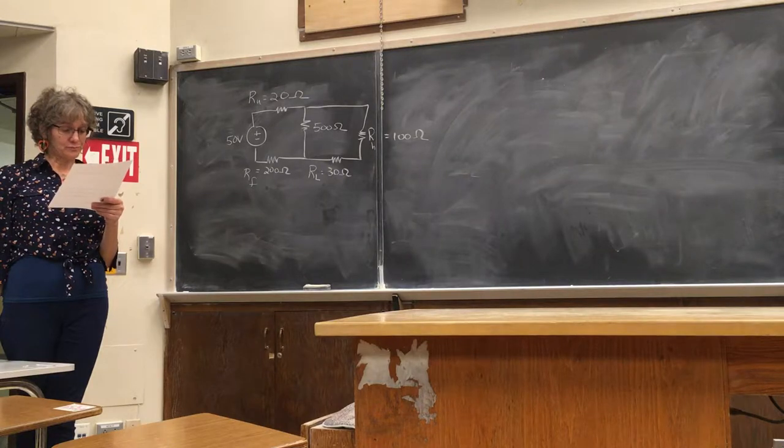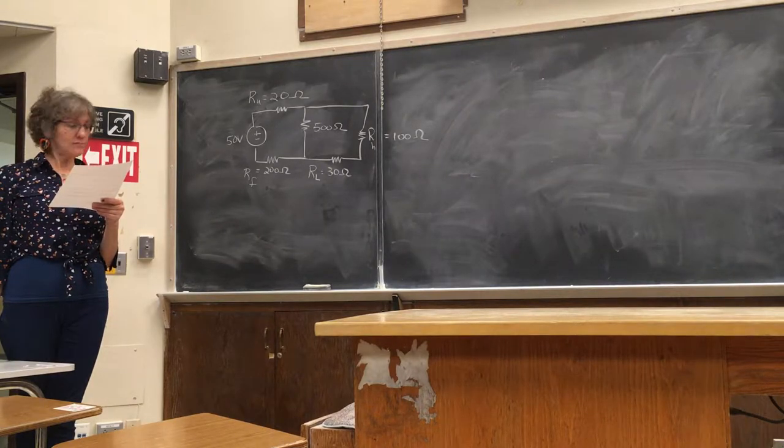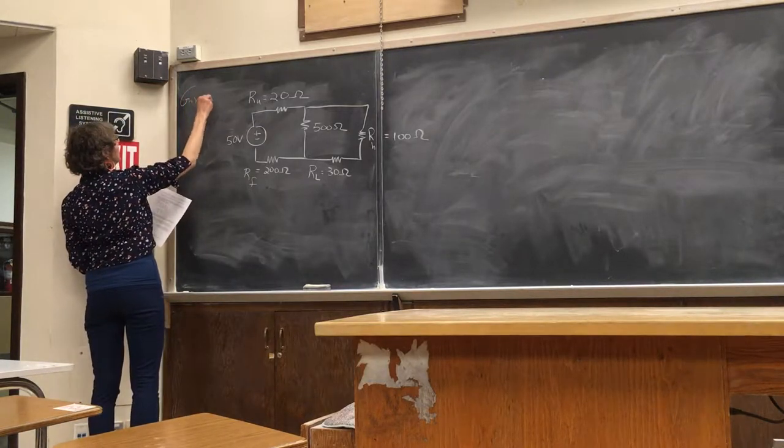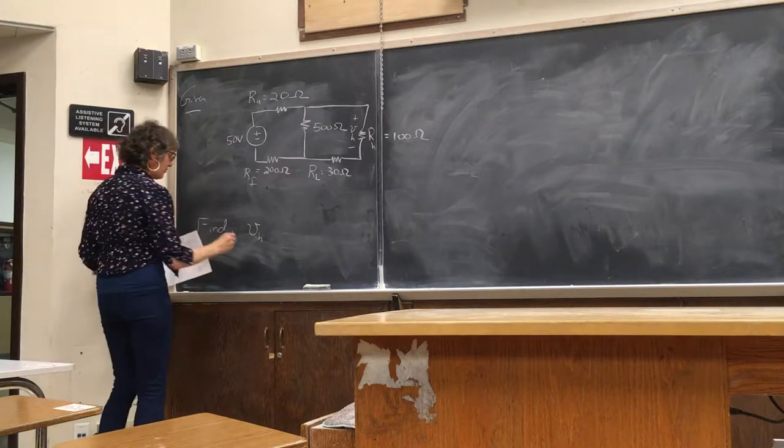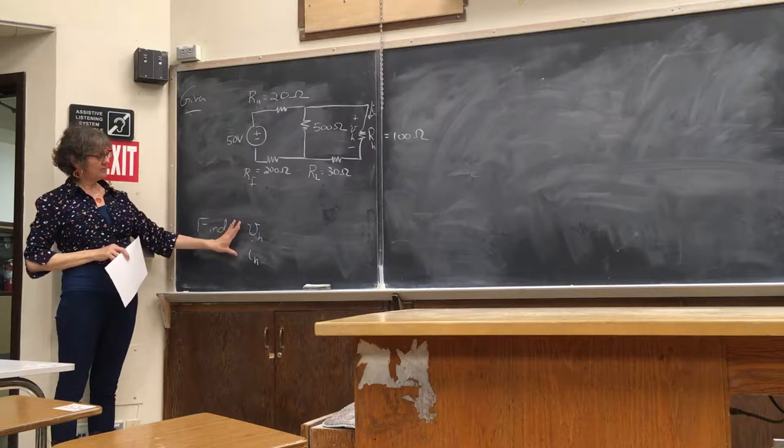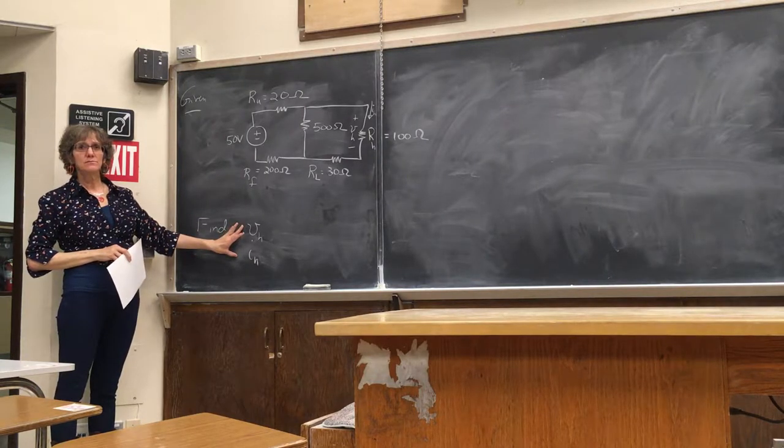All right, so this is basically the given model for the person, and what we want to do is find the voltage developed across the heart, so I'll call that VH, and the current flowing through the heart, IH. Okay, so notice I was very careful to label on the drawing the things that I'm identifying here that I'm saying I want to find.